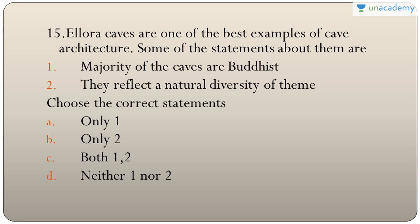Question fifteen: Ellora caves — majority of the caves are Buddhist, and they reflect natural diversity of theme. The majority are not Buddhist but are Hindu/Brahmanical. However, they do reflect diversity of theme. The answer is B — only two. In Ellora there are 34 caves total: 17 Brahmanical, 12 Buddhist, and 5 Jain.